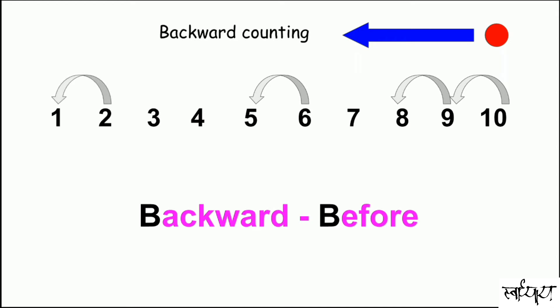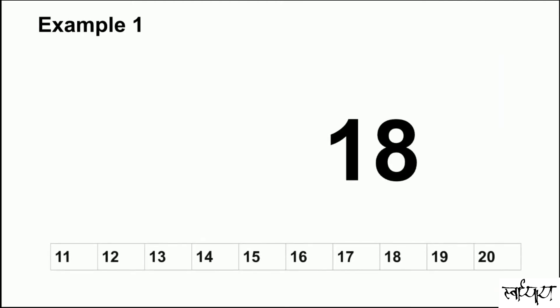Now we will look at a few more examples to understand what comes before. What comes before eighteen? Look at the number sequence and try to answer. Before, b-b-back. Seventeen comes before eighteen.